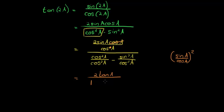And sine A over cos A is tan, minus tan squared A. And there we go.